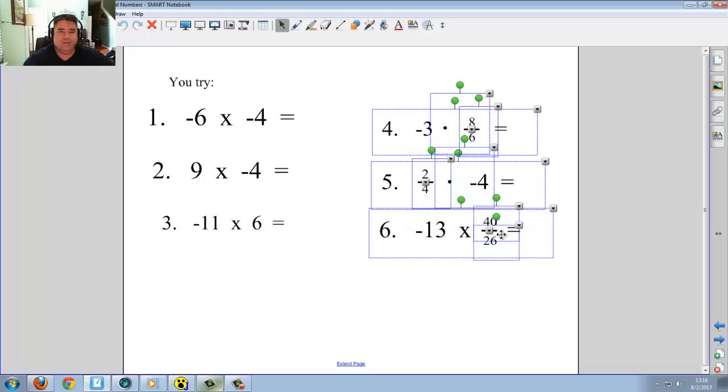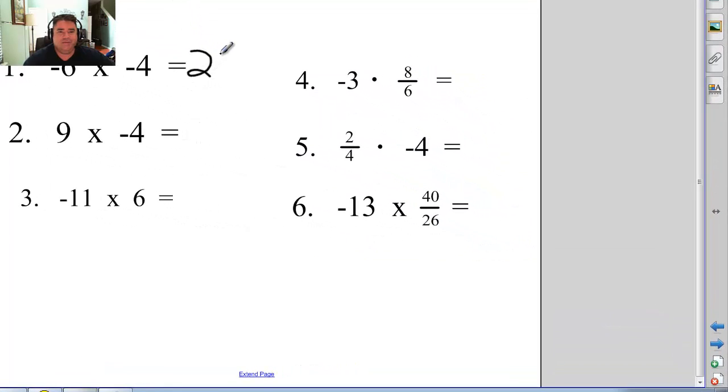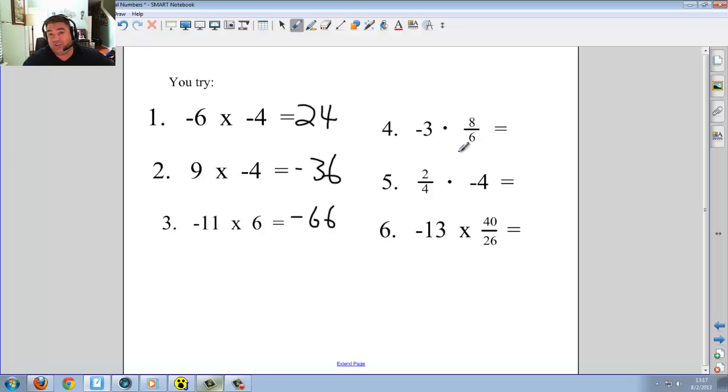Let's see how you did here. I have negative six times negative four, and that is a positive 24. Nine times negative four is negative 36. I have negative 11 times six, which is negative 66. Negative three times eight over six. I'm going to take the shortcut and take negative three divided by six, which is going to be negative half times eight, which is negative four. Or if you prefer negative three times eight, which is negative 24, divided by six is negative four, whichever makes you happy. Negative four times two is negative eight. Divide by four is negative two. And negative 13 times 40 over 26, I'm going to take negative 13 divided by 26, makes negative a half. Times 40 is negative 20. How did you do? Did you get six out of six?